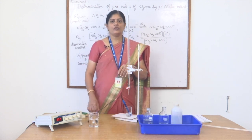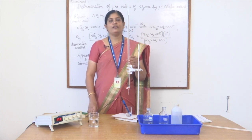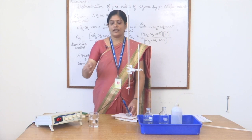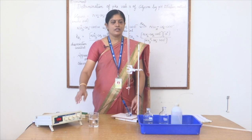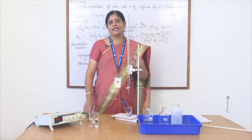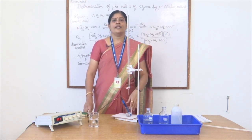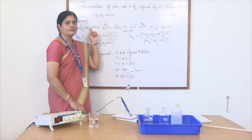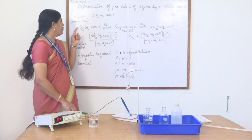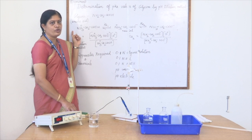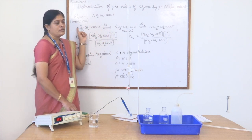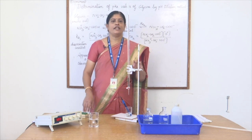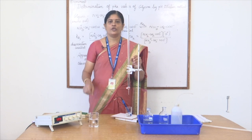The HCl solution is added in 1 ml aliquots each time. After each addition, stir the solution so that the electrode detects the pH, which is displayed as a digital reading on the pH meter. When HCl is added to glycine, the equilibrium shifts to the left, producing the glycineum cation where the amino group undergoes protonation. Continue adding HCl up to 30 ml total volume, noting the pH after each 1 ml addition.